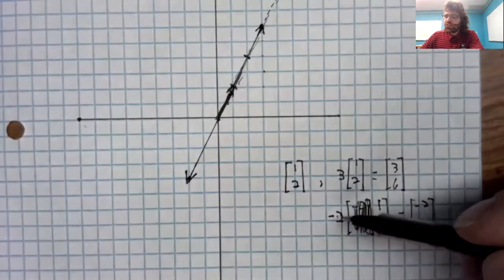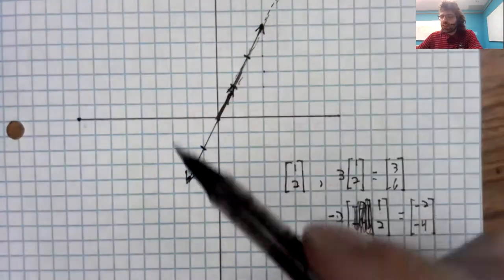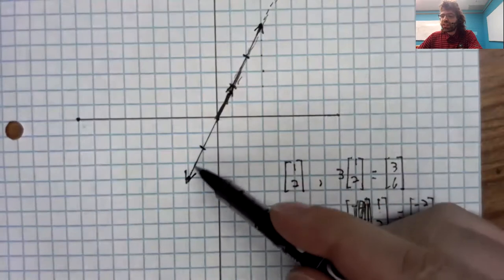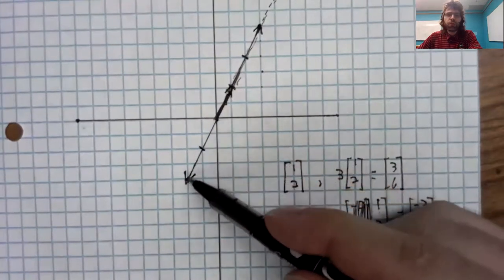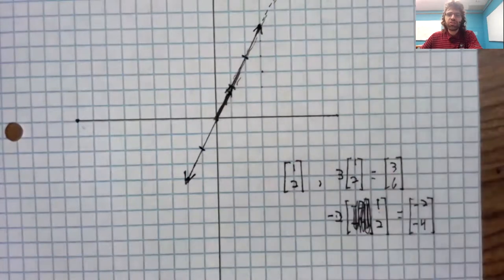And we see this too. And the length of this vector is twice the length of this vector.